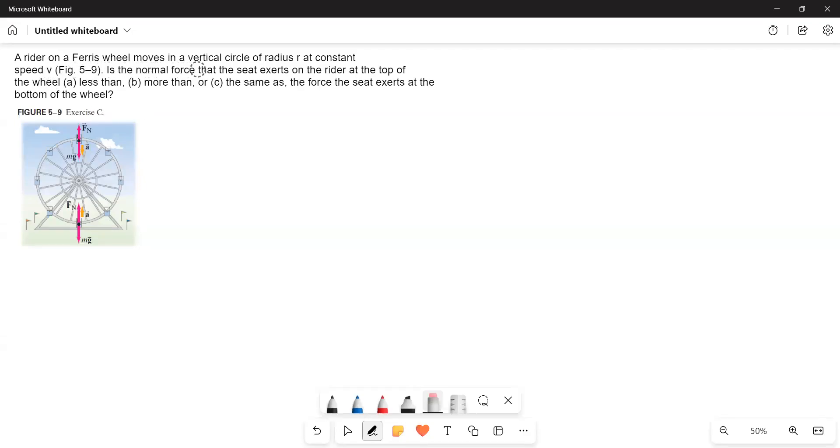A rider on a Ferris wheel moves in a vertical circle of radius r at constant speed. Is the normal force that the seat exerts on the rider at the top of the wheel less than, more than, or the same as the force the seat exerts at the bottom of the wheel?